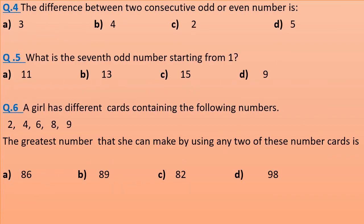The difference between two consecutive odd or even numbers is: difference between two consecutive odd or even numbers is 3, 4, 2, or 5?